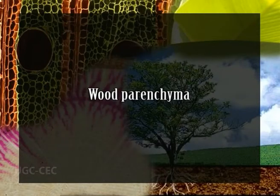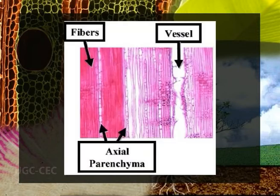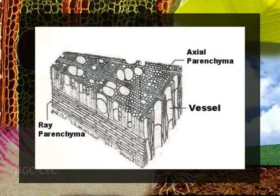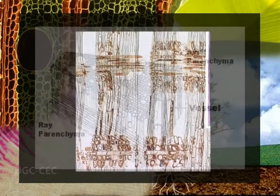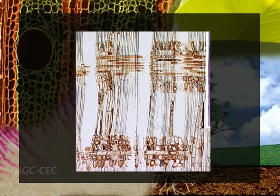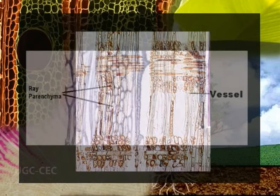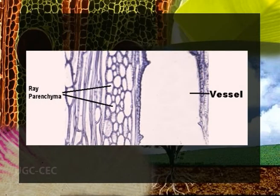Wood parenchyma: there are two types of parenchyma found in the secondary xylem. The first type is axial parenchyma and the second is ray parenchyma. The ray parenchyma cells originate from special, relatively short cambial initials, while cells of the axial parenchyma develop from fusiform initials. All ray parenchyma cells may have secondary walls or only primary walls developed. Where the secondary wall is developed, pit pairs may be simple, half-bordered, or even bordered.